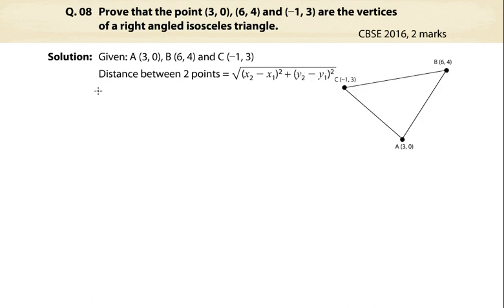Let's find AB square. Let's put the values in the formula and simplify. Therefore, AB² = 25.